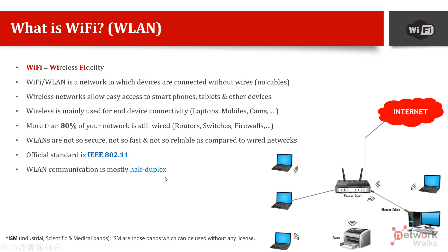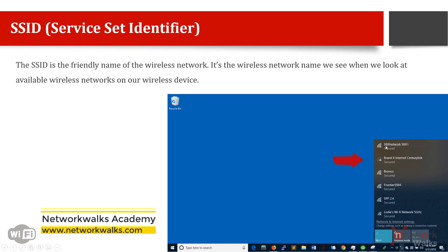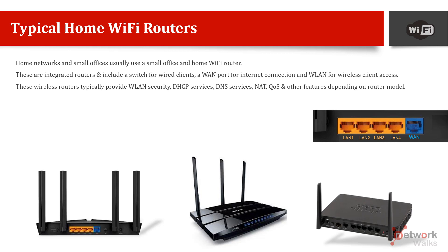What is SSID? SSID stands for Service Set Identifier — in simple words, it is just the name of your Wi-Fi network. When configuring a Wi-Fi device, you give your network a name, and you can even have more than one SSID from a single device. For example, you might see network names like 'NW Network Wi-Fi', 'Brand X Internet', or 'Bronco' — these are all SSIDs. Duplicate SSIDs are allowed and don't cause problems.